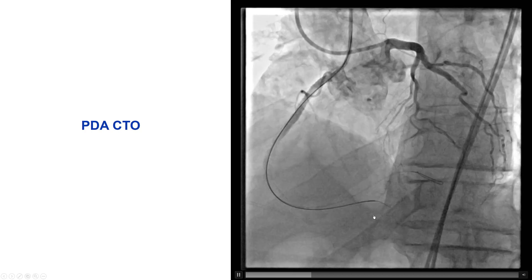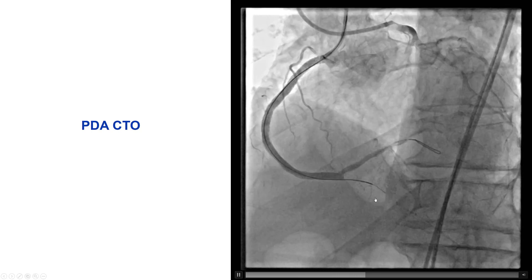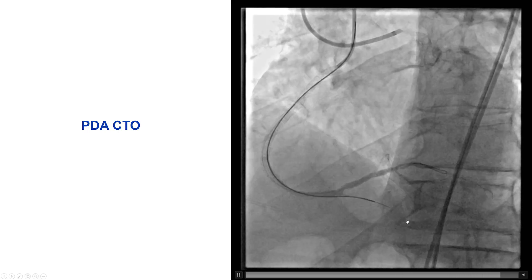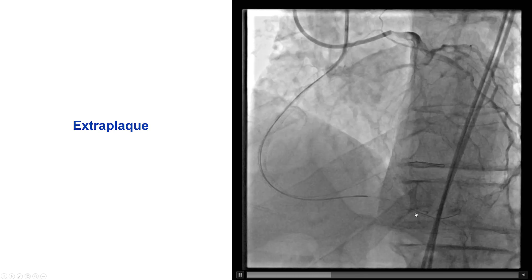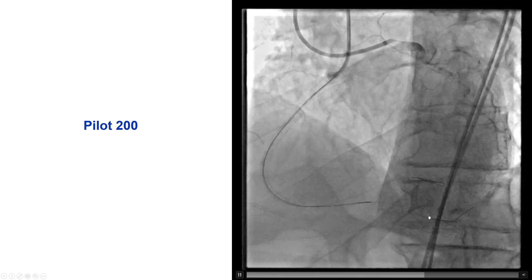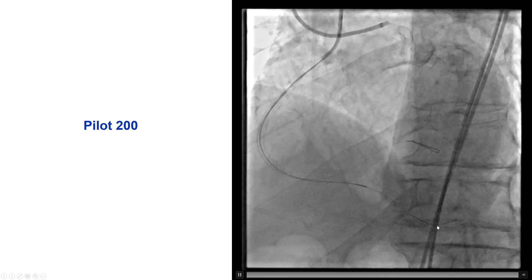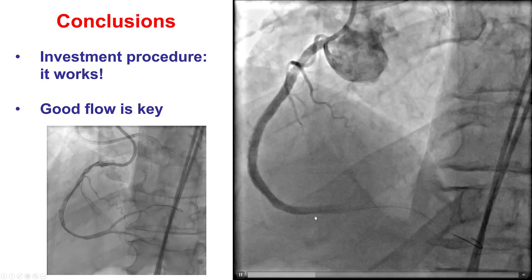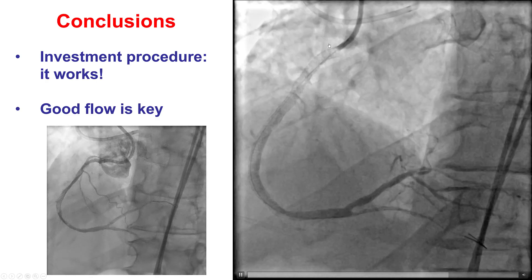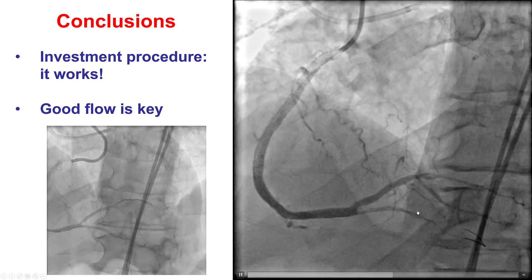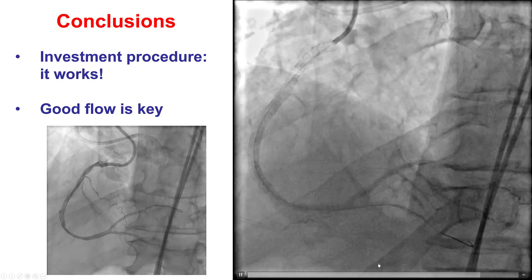We decided to attempt to re-canalize the RCA CTO, so we did antegrade wire escalation with the Corsair. The Fielder XTA seemed to enter into an extraplural plane, so it was removed, and then we used the Pilot 200, which this time seemed to advance within the distal true lumen. Given the small size of the vessel, we performed inflation with a 1.5 millimeter balloon and ended up with a nice final result, with TIMI flow into the RCA, posterolateral, and PDA. We did not place any stents in the PDA due to the small size of the vessel.